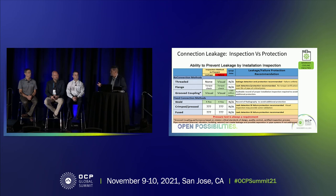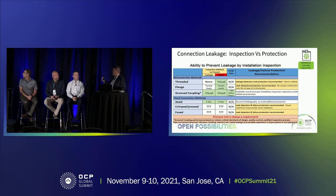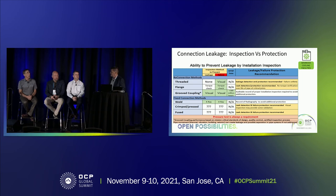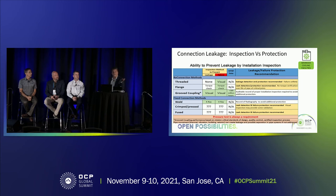Walking through this, we'll take thread first. Can you ever verify that you're not going to have a leak on a thread connection? No. But with visual verification, do you feel you could have some confidence that it's not going to separate or have a major failure? A thread connection will not separate or have a catastrophic failure. So an inspection process gives you some confidence, and the level of protection you'd give it would be a leak detection system. You try to make sure you don't have threaded connections right over your rack — or if you do, you'd have drip trays and leak detection. For a flange, the same applies.